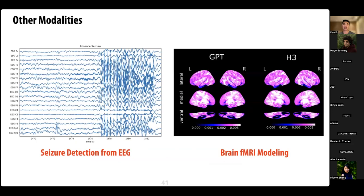We also evaluated H3 on other modalities. We used it for seizure detection from EEG and achieved very good results, and for brain fMRI prediction — a generative sequence task predicting how brain waves change — which was another interesting application.